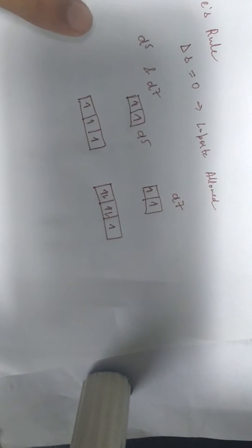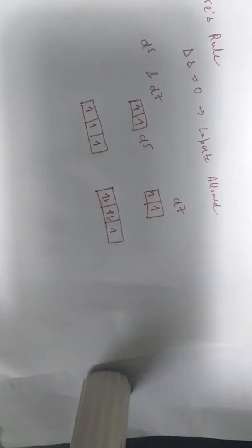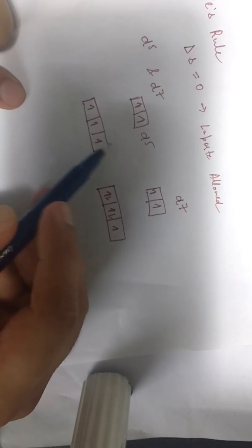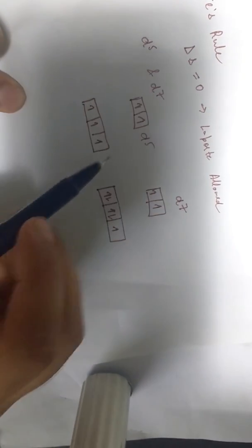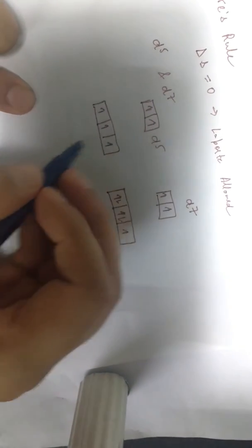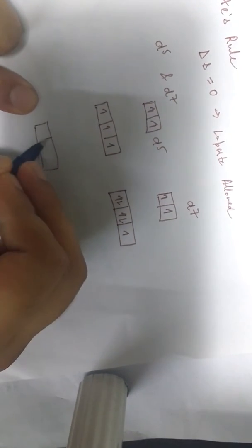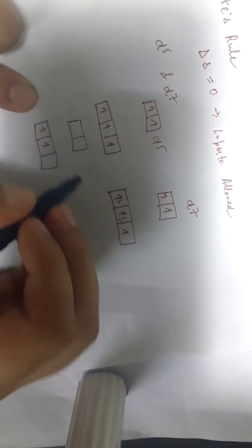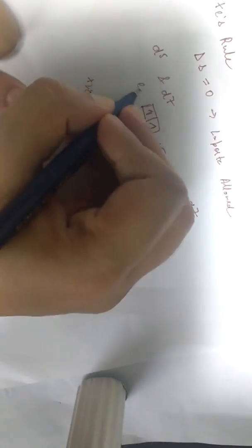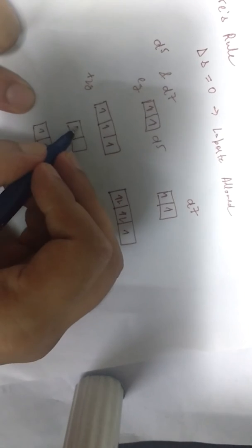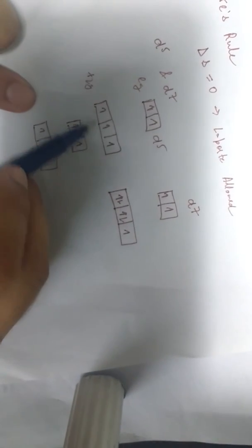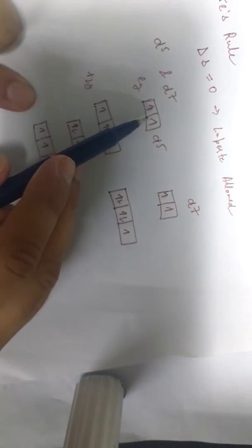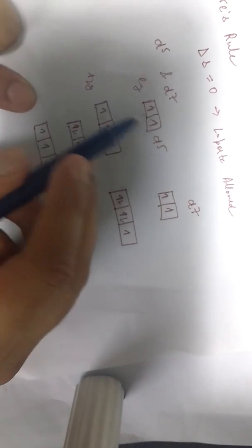Now, delta S should be equal to 0 if it's Laporte allowed. Now if we see for D5 configuration, if we provide some energy, if the DD transitions indeed take place, what will happen is that once this electron is excited, if it goes, say one of the electrons goes to the upper EG state, so this is T2G, this is EG, and if it goes to the EG, you see, so if we calculate the total spin in D5, this was half plus half plus half, that's 3 by 2 plus half, 2 plus again half, so that's 5 by 2. So the total spin over here was 5 by 2.